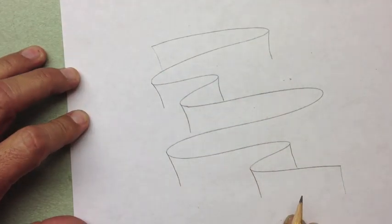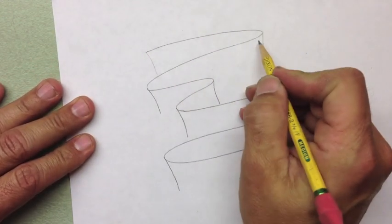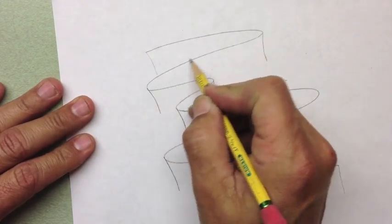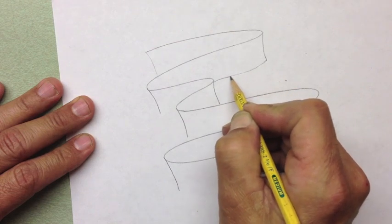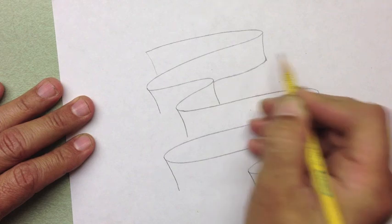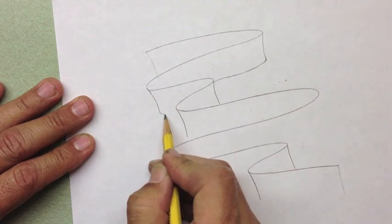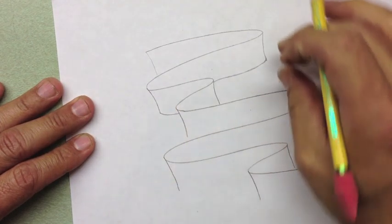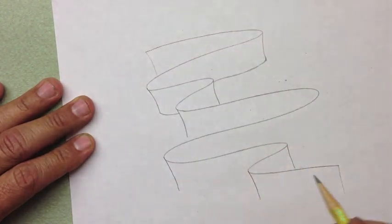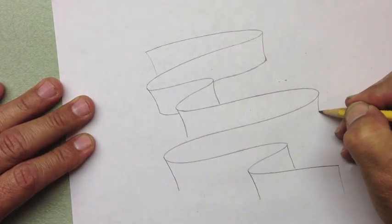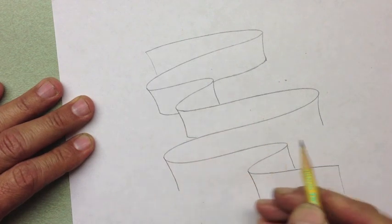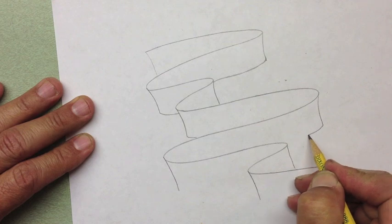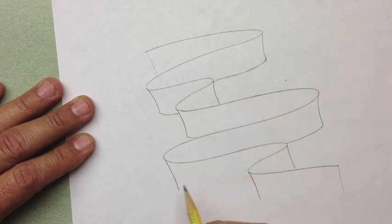Next thing you're going to do is draw a line parallel to this. So you see this line here, you want to draw a line that's parallel to that. It curves. And you have a little line here parallel to that. Parallel means that the lines stay the same distance apart. They don't get closer together.